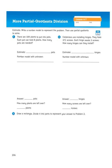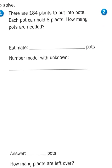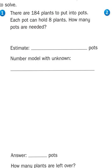So let's read the first problem. It says there are 184 plants to put into pots. Each pot can hold eight plants. How many pots are needed? Now before we come up with an estimate, let's write our number model and our number model is going to be 184 divided by 8 equals something. Let's say P for plants.